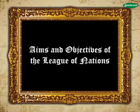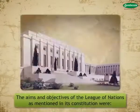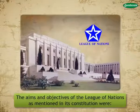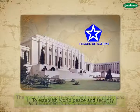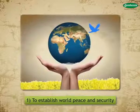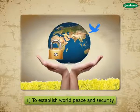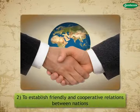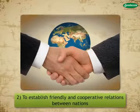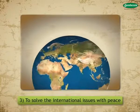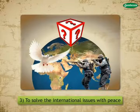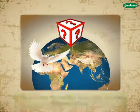The aims and objectives of the League of Nations as mentioned in its constitution were: 1. To establish world peace and security. 2. To establish friendly and cooperative relations between nations. 3. To solve international issues with peace, avoiding wars.